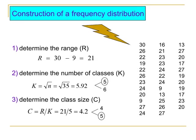In the construction of a frequency distribution, we will follow these steps. The first step is to determine its range. For the purpose of the calculation, we will be using the example at the right side. Range is the difference between the highest observable value and the lowest observable value.